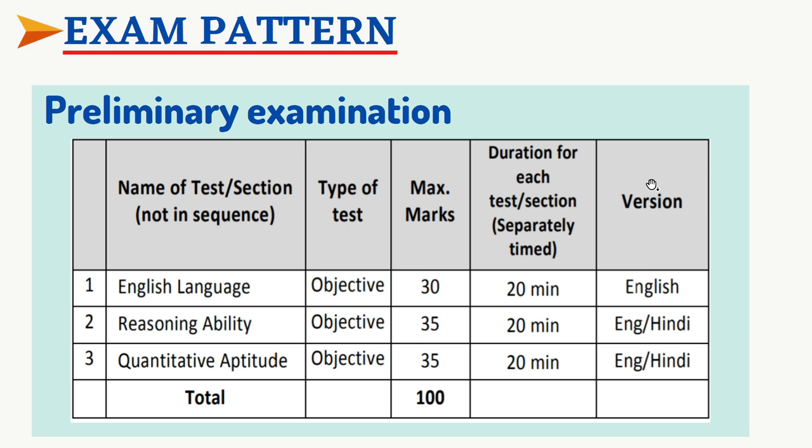For the exam pattern, in Prelims there will be three sections: English, Reasoning, and Quantitative Aptitude. English carries 30 marks, Reasoning carries 35 marks, and Quantitative Aptitude carries 35 marks — totaling 100 marks. There will be sectional timing for each section.